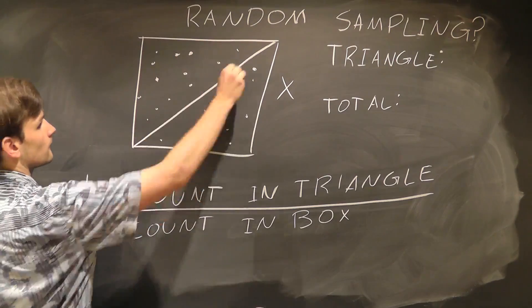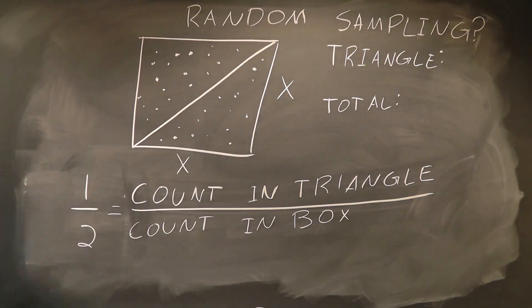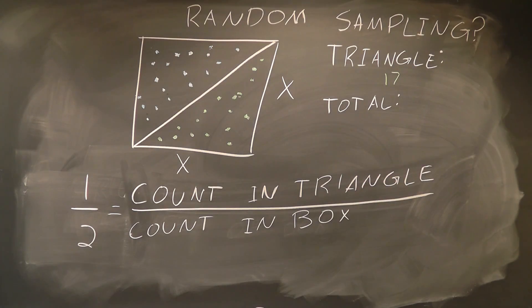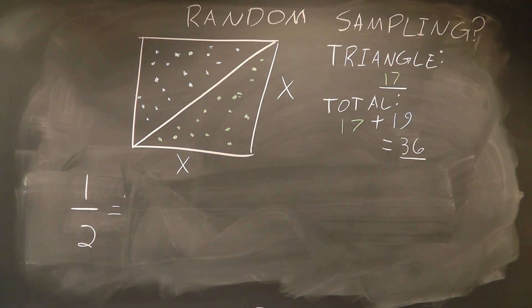So let's try it out. I'm going to plot a whole bunch of random points within the box, and afterwards you'll see that 17 fall within the triangle and a total of 36 fall within the entire box. Now, I guess that ratio isn't quite 1 half, but it's pretty close.